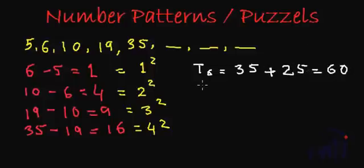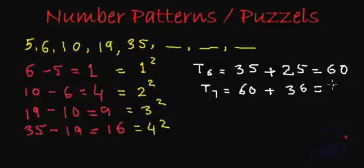And similarly, T7 will be 60 plus square of 6. 6 squared is 36. 60 plus 36 is 96.